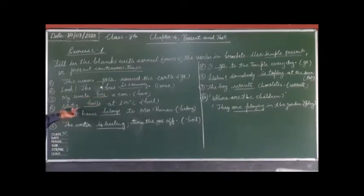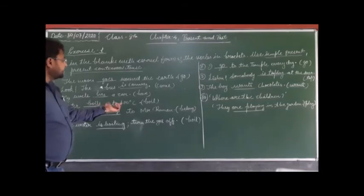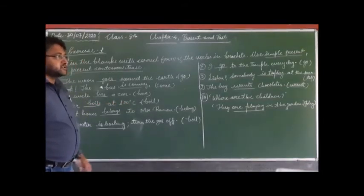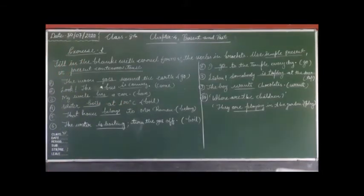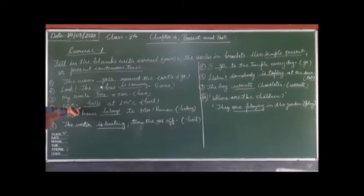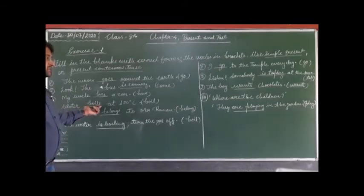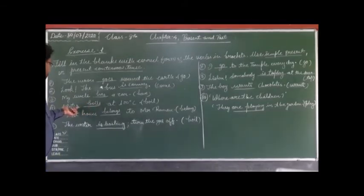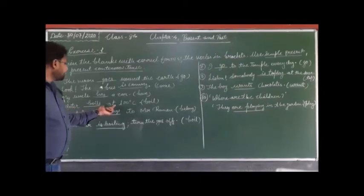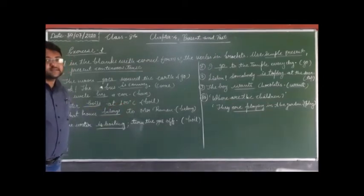The fourth sentence is: water dash at 100 degrees Celsius. This is a sentence of universal truth. For these kinds of sentences we use simple present tense. So the sentence will be: water boils at 100 degrees Celsius.